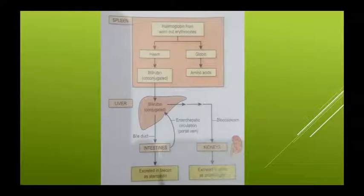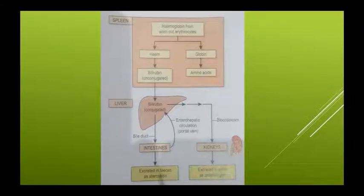यह conjugated hepatic bilirubin bile ducts के द्वारा intestine में चला जाता है। Intestine से वापस यह enterohepatic circulation में portal vein से जा सकता है। Intestine के बाद यह feces में stercobilin के रूप में excrete हो जाता है, या फिर concentrated bilirubin blood stream से kidney में जाता है और urobilinogen के रूप में urine में excrete होता है। यह bilirubin का metabolism यानि pathophysiology है।